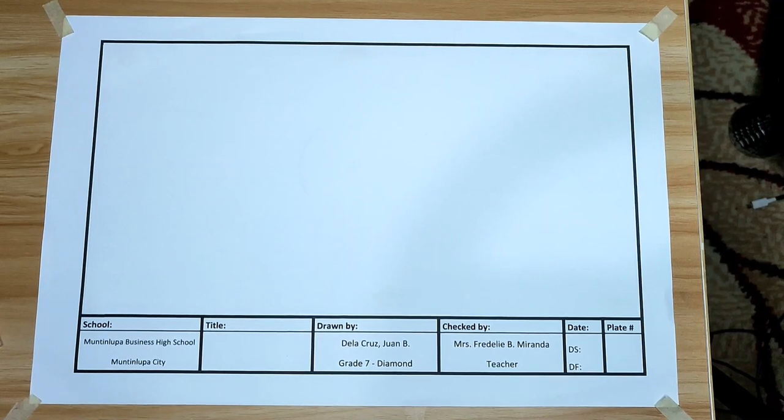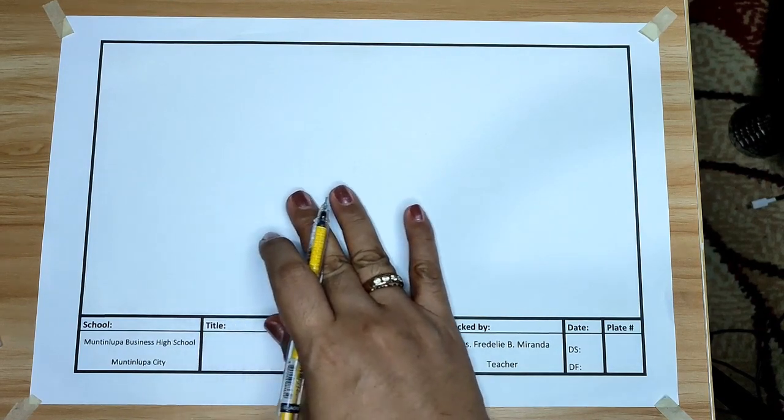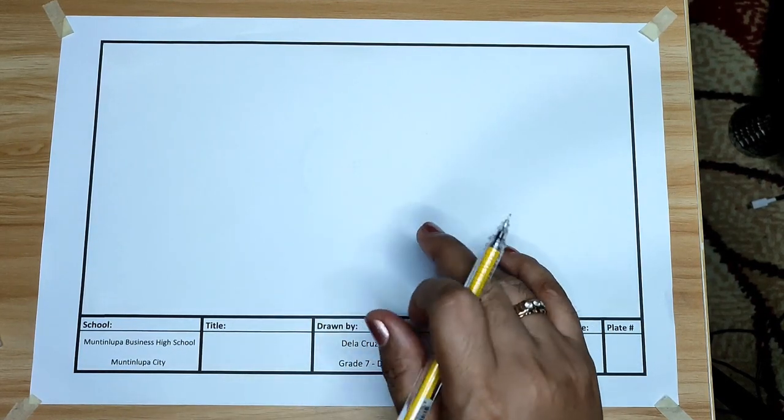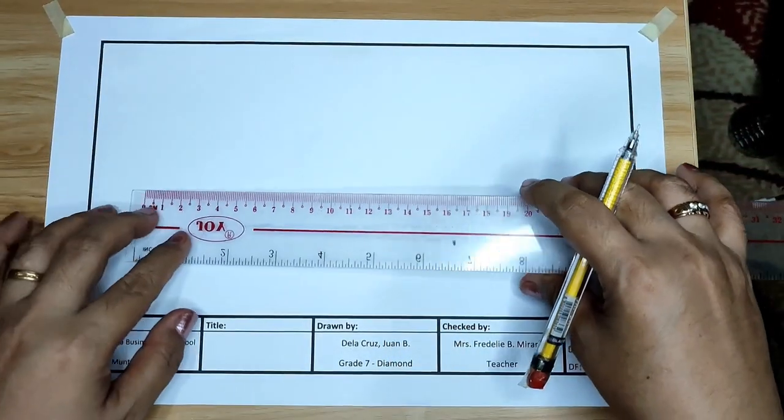Are you ready for the activity? Let's begin. Approximately at the center of our drawing paper, let us draw a small cross.